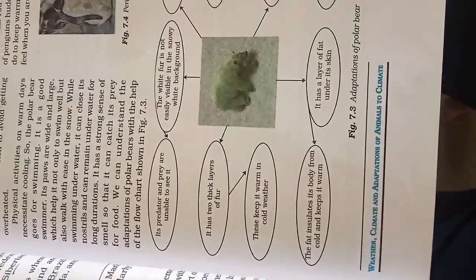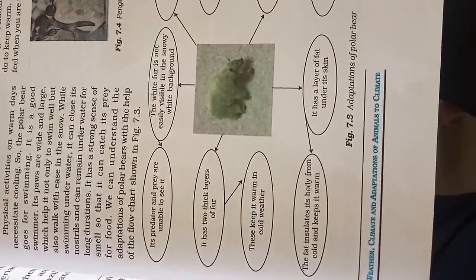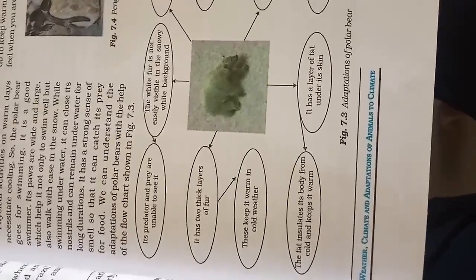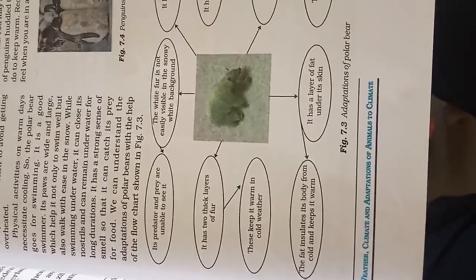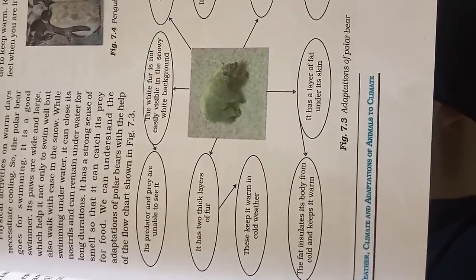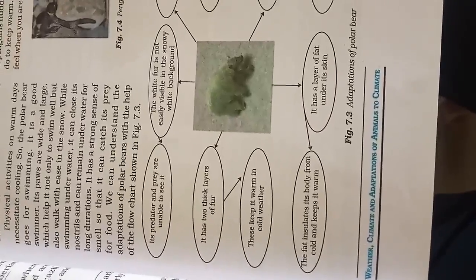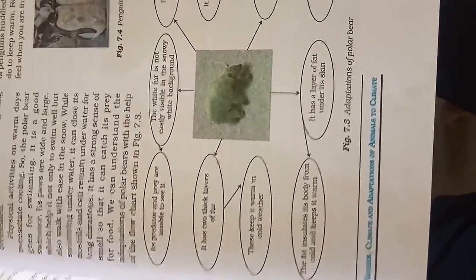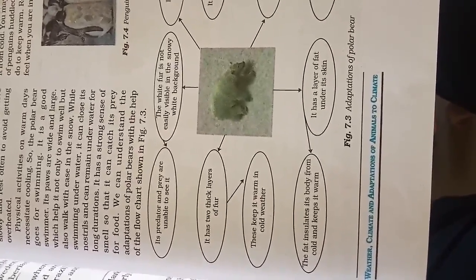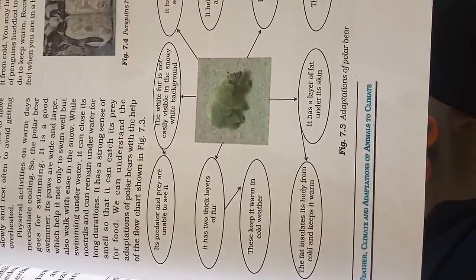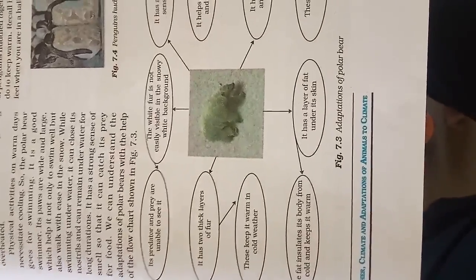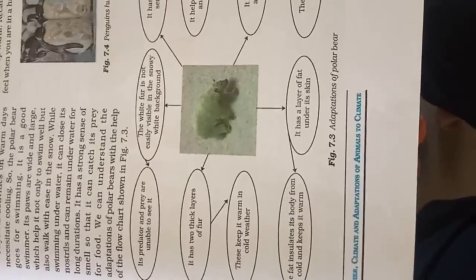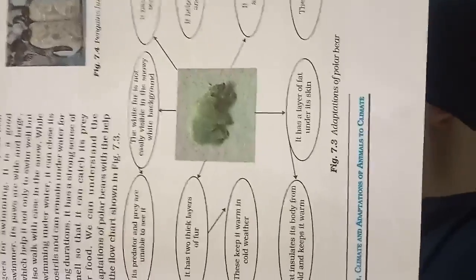This keeps the polar bear warm in cold weather, which is why it can live in polar regions. It has two thick layers of fur naturally. Because of the white fur, predators and prey are unable to see it easily. These are the adaptations of the polar bear that allow it to easily survive in those conditions.